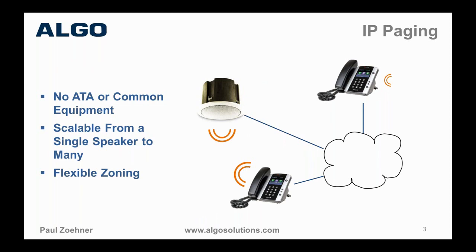All of that complicated equipment and wiring goes away, and you can simply install one IP speaker. There's no common equipment — it's very scalable. No ATA, no telephone answering module. It could be one speaker or many speakers, and it's very flexible in zoning. It doesn't really matter where the speakers are or how you want to zone them — that can be decided later or changed at any time. IP paging is scalable and linear, from one speaker to many thousands.